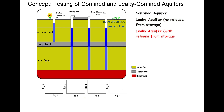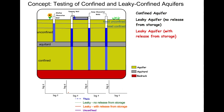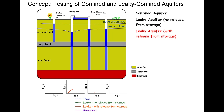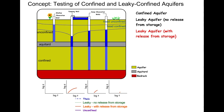For the final option, the aquitard is permeable and stores water. After pumping begins, water levels in all the wells decline but more slowly than in the previous settings because at early time water comes from storage in the aquitard, reducing the amount removed from storage in the aquifers.